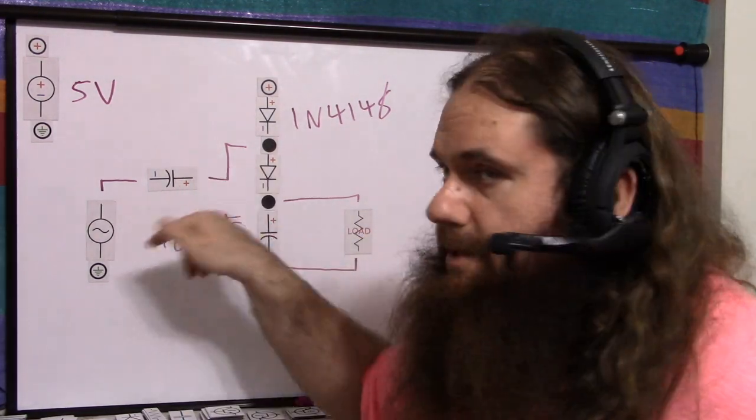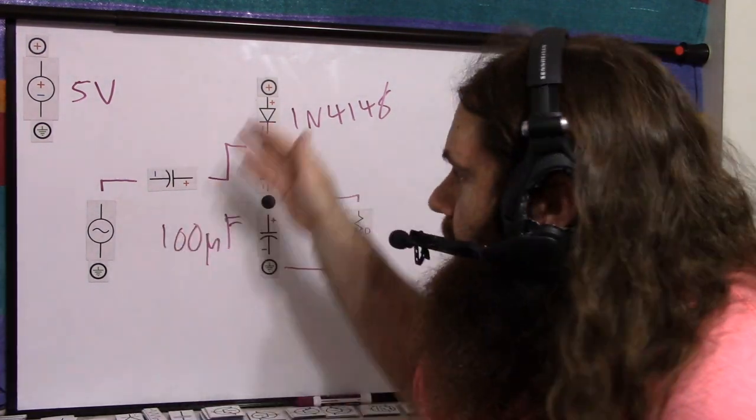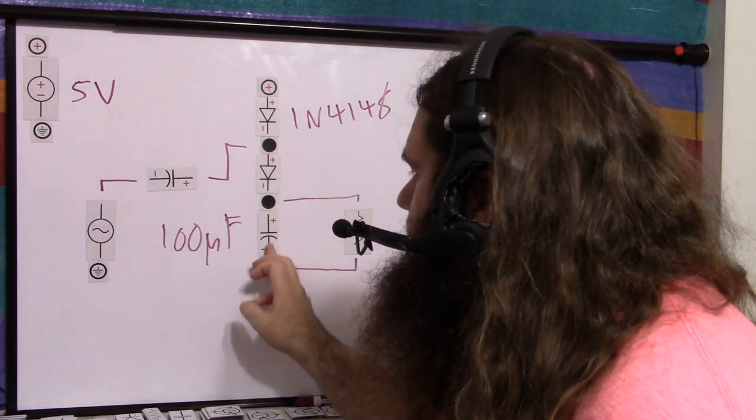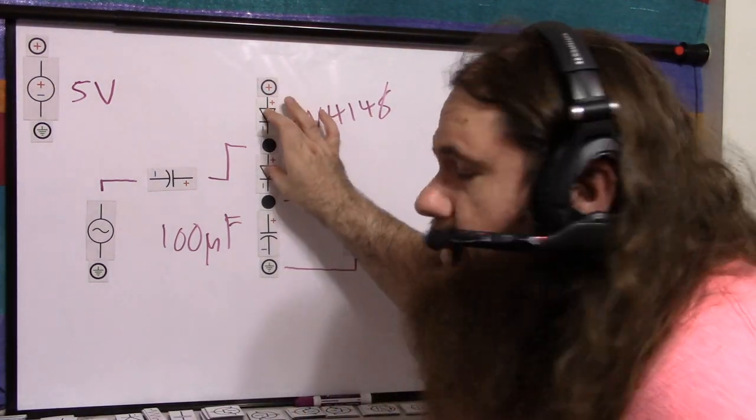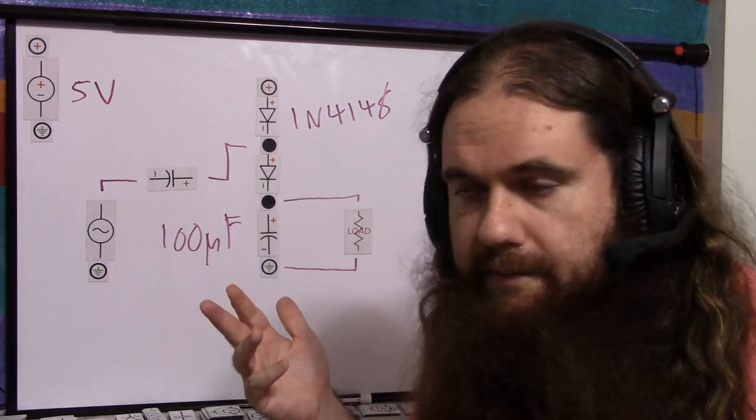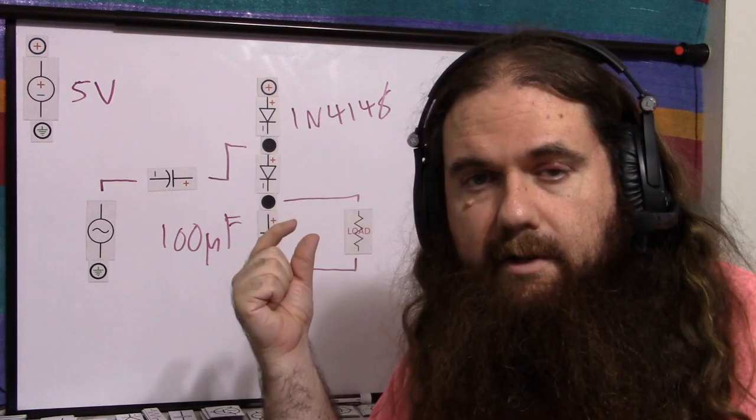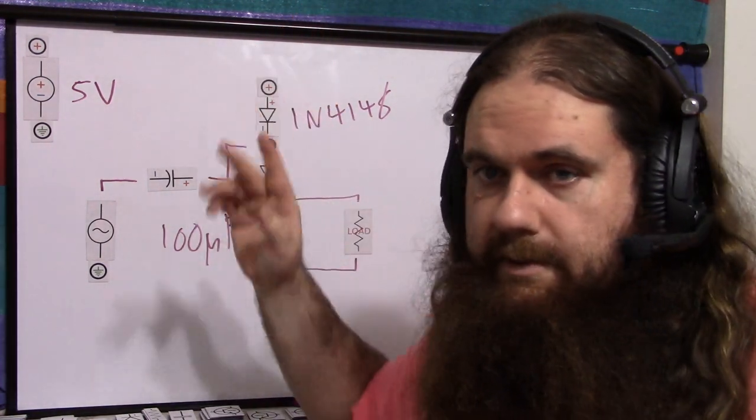And then when the capacitor is charging, when the square wave is low and the capacitor is charging, then the supply is coming through. And this diode prevents the capacitor that's charged to 9 volts trying to blow its way through the power supply. So both of the diodes are there to block the power supply from receiving the increased voltage.